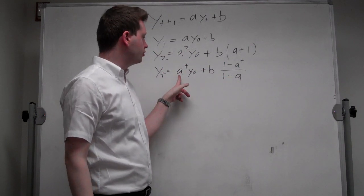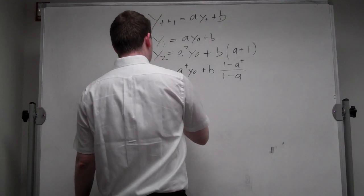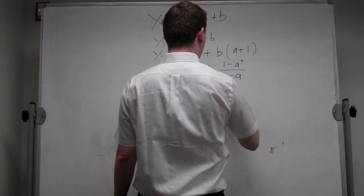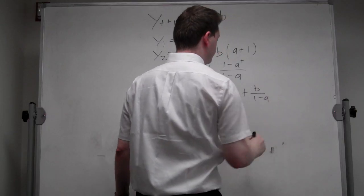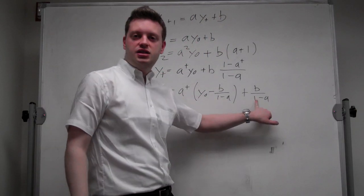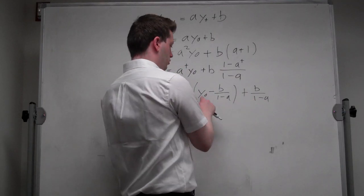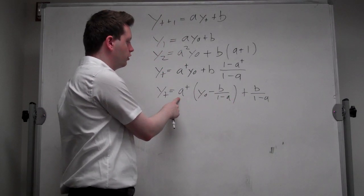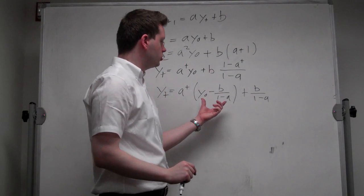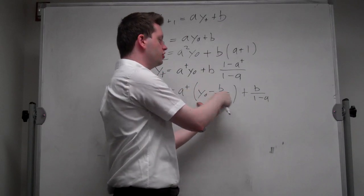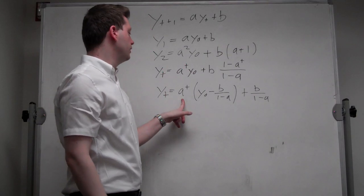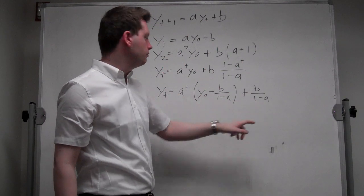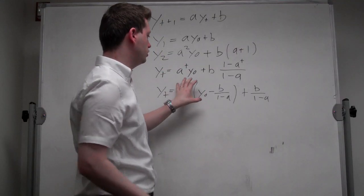If we write it like that, we can collect all the terms of a to the power of t, which makes it a bit more convenient to read. And we get yt equals a to the power of t times y0 minus b over 1 minus a, plus b over 1 minus a. This immediately gives us a steady state. If our initial condition y0 is at the steady state, this term will be zero and it will always stay at that point. We can interpret the bracket term as an initial deviation from the steady state. We can also immediately see that if the absolute value of a is less than 1, yt will converge to the steady state, because a to the t will converge to zero, so we're left with the last term.